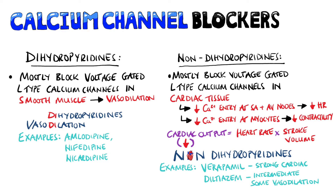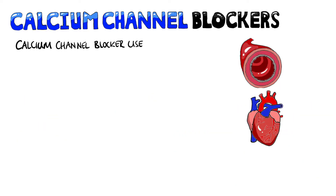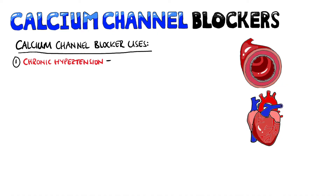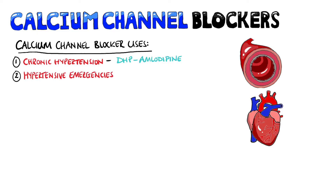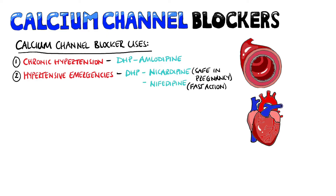Calcium channel blockers are often used in chronic hypertension, particularly slow-release preparations with a longer half-life that allow smoother blood pressure control. Dihydropyridine calcium channel blockers like amlodipine are most commonly given for chronic hypertension. For hypertensive emergencies, nicardipine is safe for use in pregnancy, and nifedipine can work very quickly.